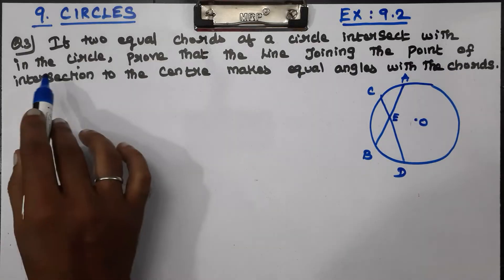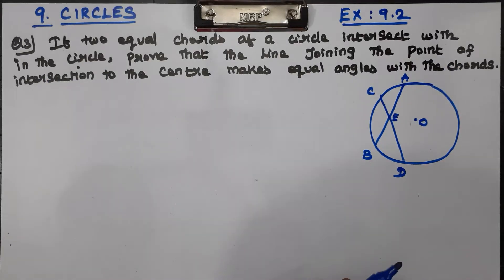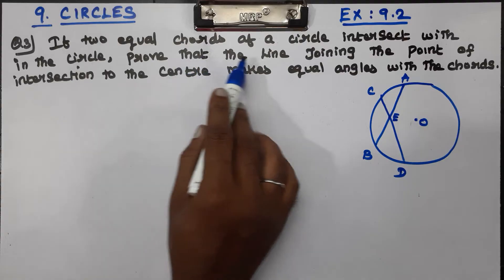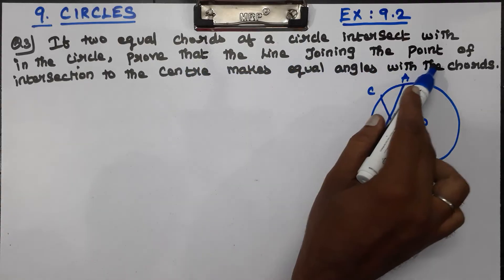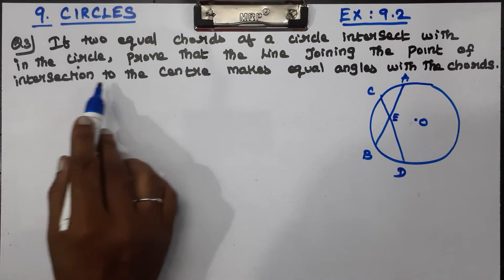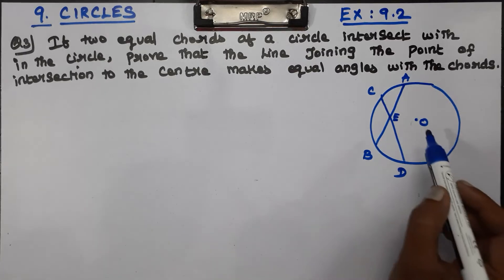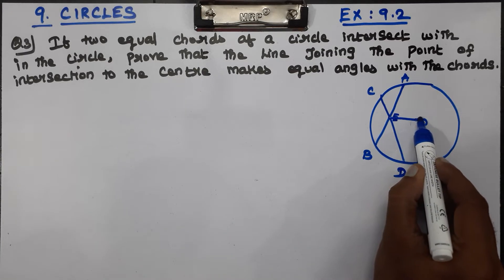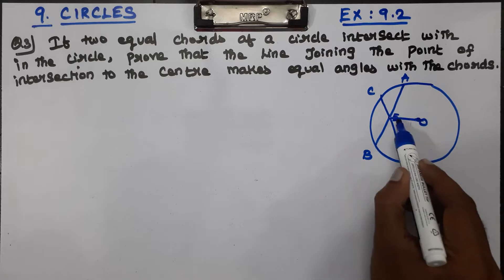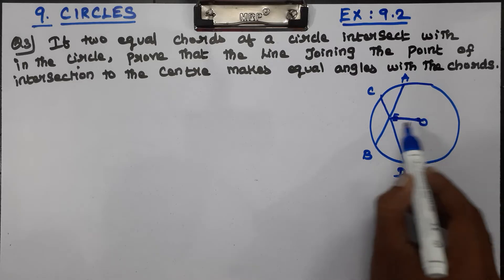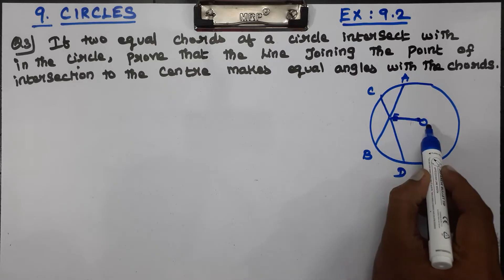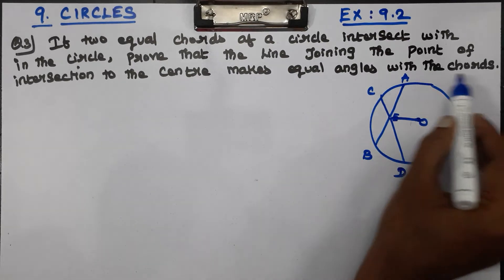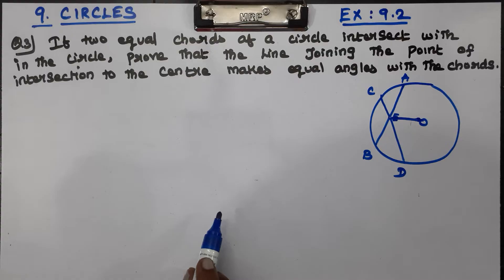If two equal chords of a circle intersect within the circle, we need to prove that the line joining the point of intersection to the center makes equal angles with the chords.